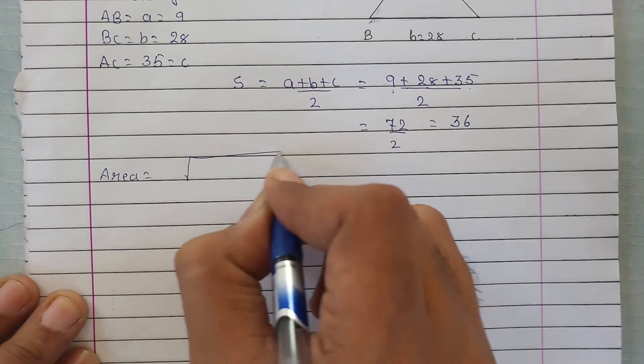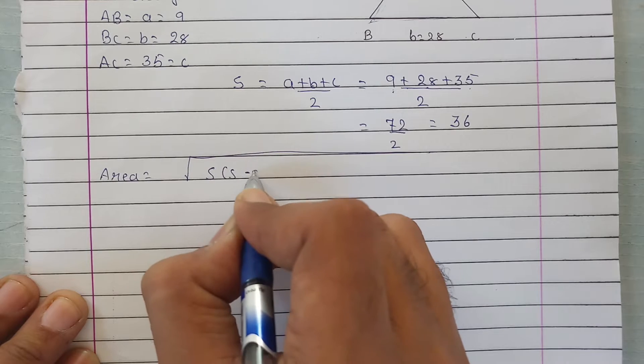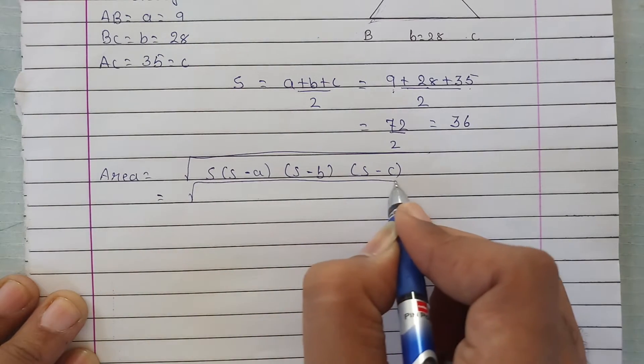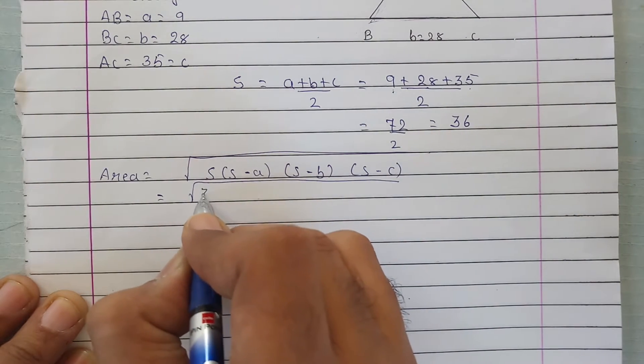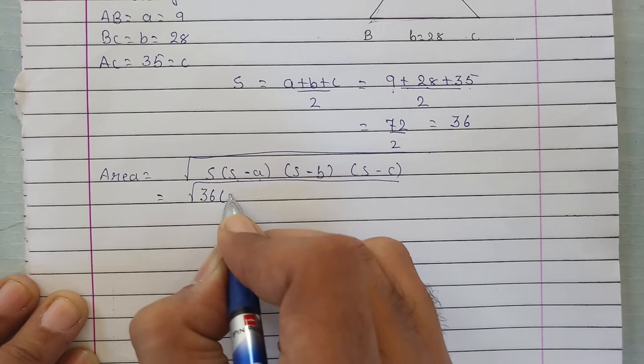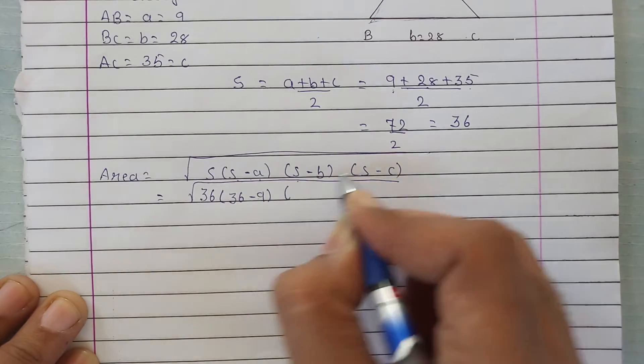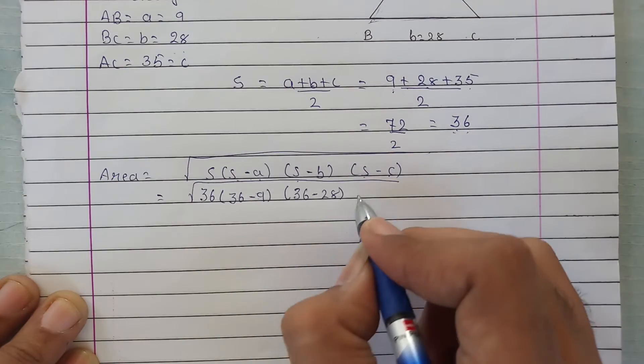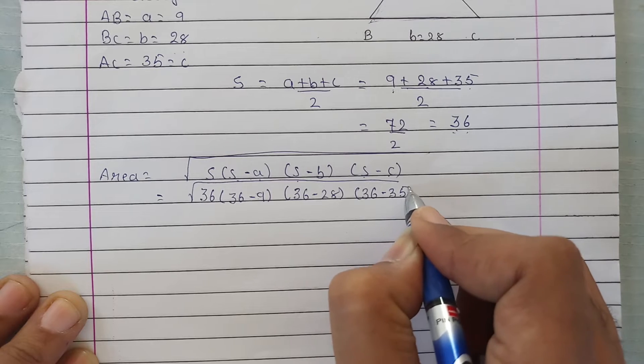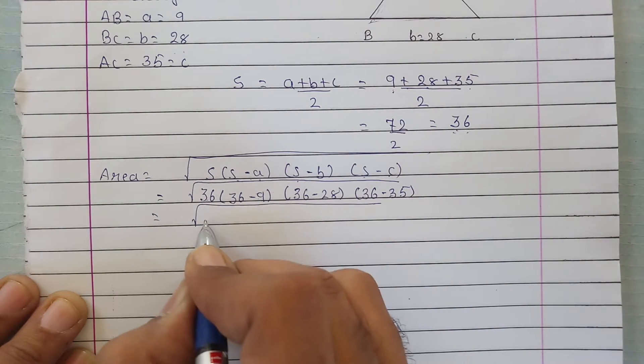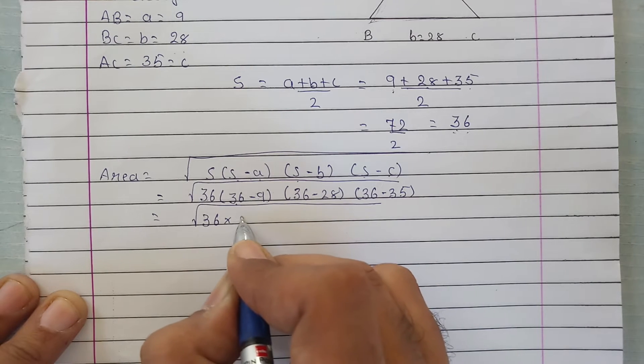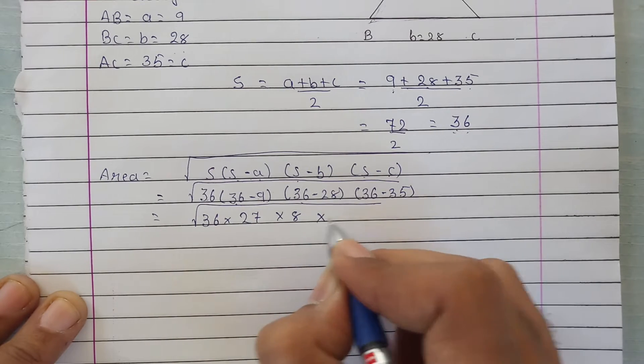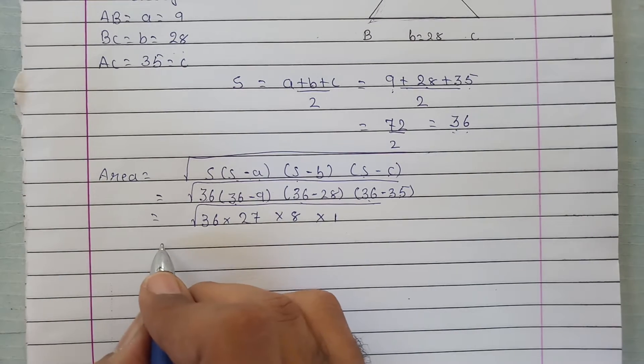Now let's write the formula for the area: Area = square root of S(S - a)(S - b)(S - c). Now putting values: S = 36, S minus a = 36 minus 9 = 27, S minus b = 36 minus 28 = 8, and S minus c = 36 minus 35 = 1.